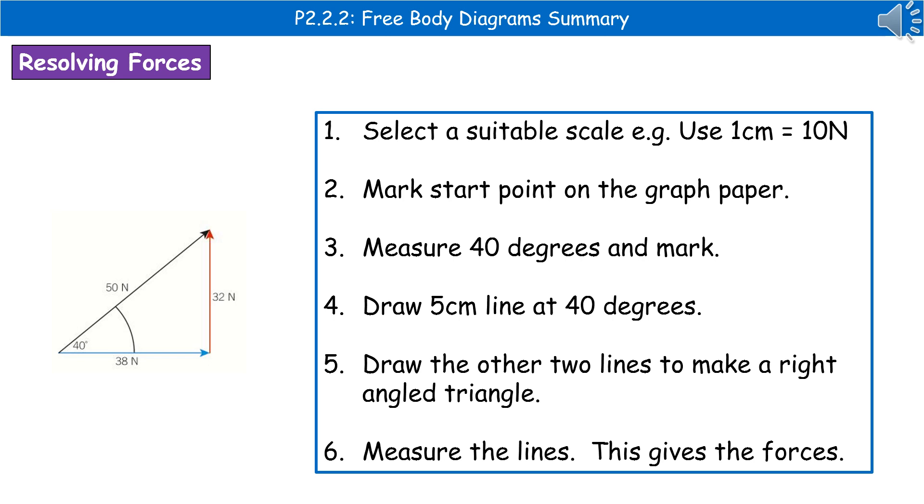You then draw your 5 centimeter line at 40 degrees to represent your 50 newtons in this case. Once you've got that, you draw two other lines to make a right angle triangle, which are represented by the red and the blue on the left there.